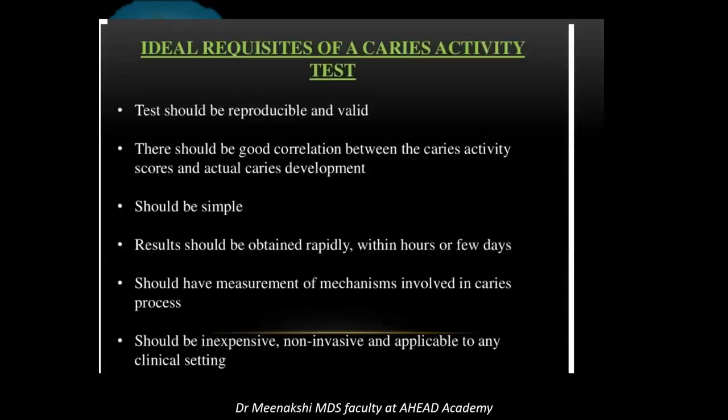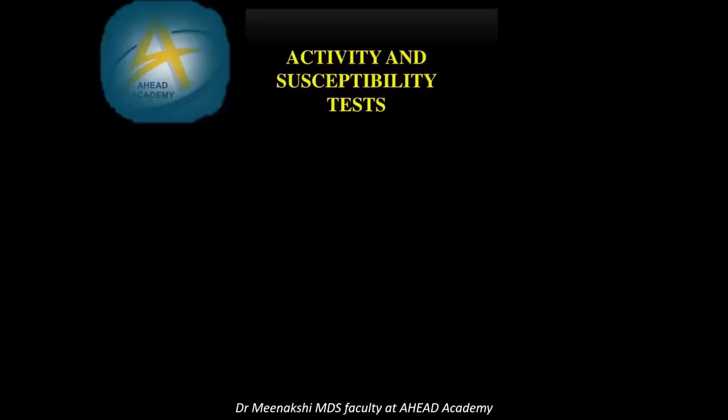The ideal requisites of a caries activity test are: number one, it should be valid and reproducible. Number two, the test should have a good correlation between the caries activity and the actual developmental activity of the caries lesion. It should be simple in nature, the result should be obtained rapidly within hours, and it should measure the mechanism involved in the caries process.